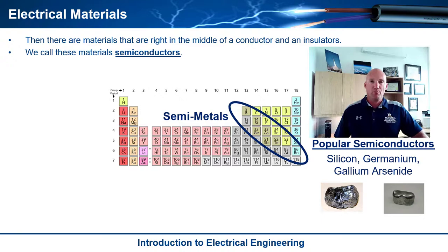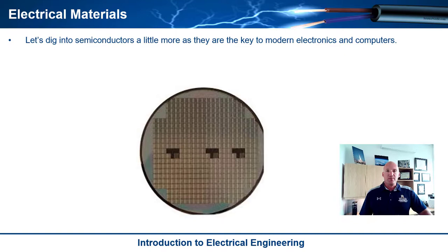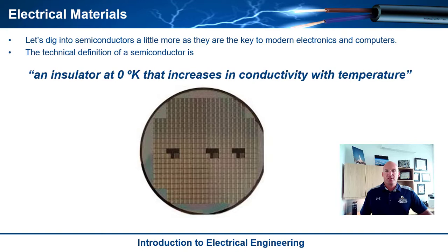One last thing I'd like to mention about semiconductors: the technical definition of a semiconductor is that at absolute zero — zero degrees Kelvin — it's an insulator, so current does not flow through it. But as you increase the temperature, it becomes more and more conductive. So it changes its conductivity with temperature.